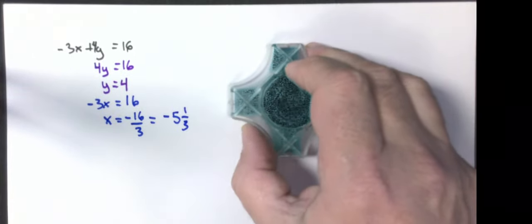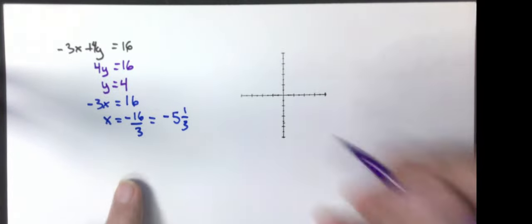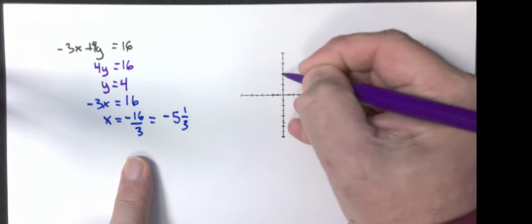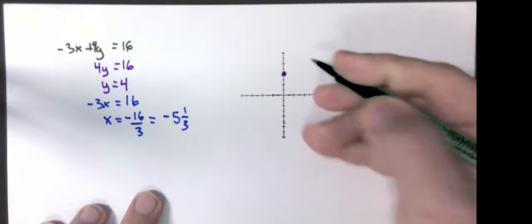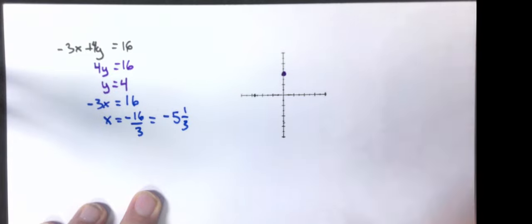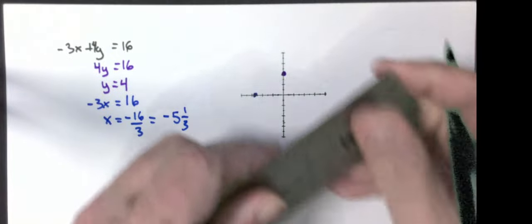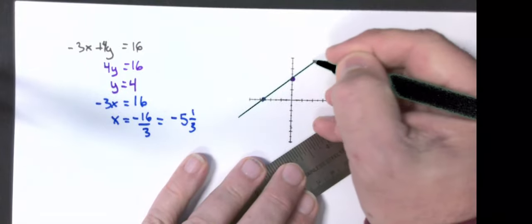If I want to graph this, I get Y is 4. X is negative 5 and 1 third. I need to do that one in blue. Then I get my straight edge and I graph them.